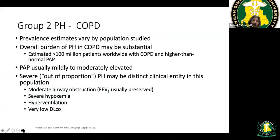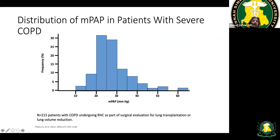Group three PH occurs in the context of lung disease such as COPD, where PH is out of proportion to the degree of lung disease. Patients with severe COPD typically have mean PA pressures around 20–30 mmHg. Some group three patients have very high mean PA pressures, but the majority have mild pulmonary hypertension.